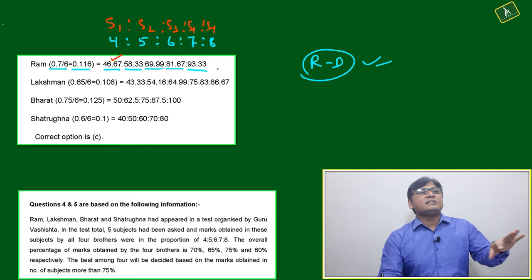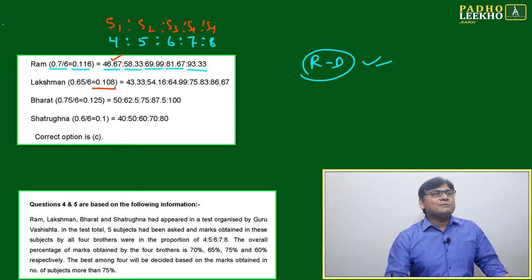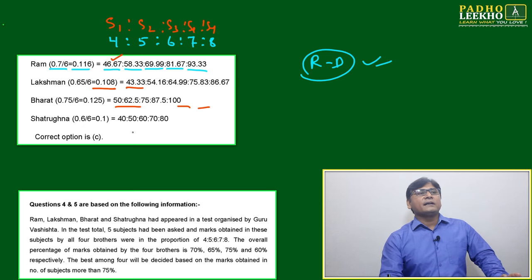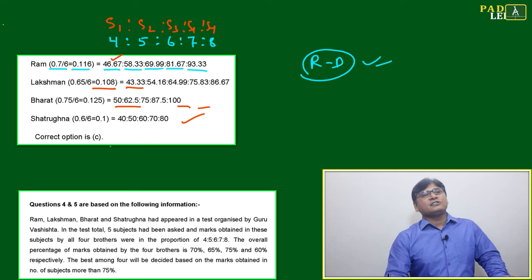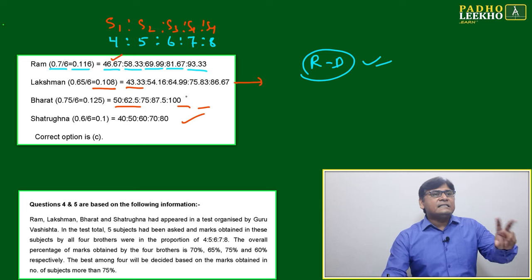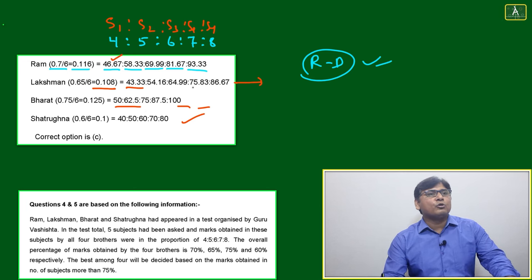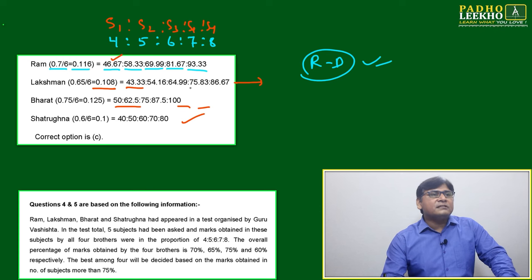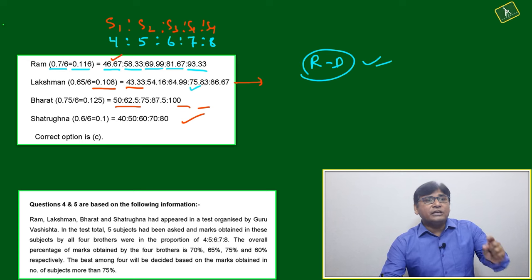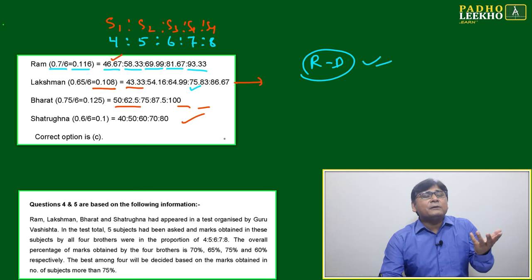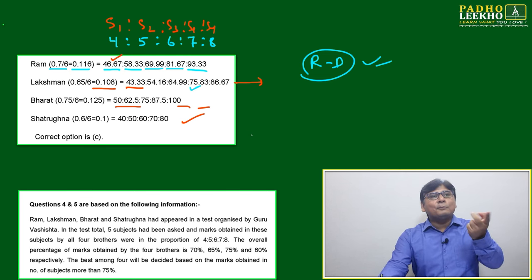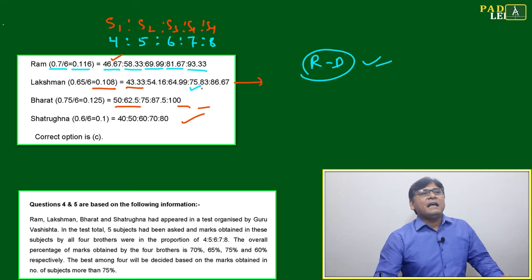For Lachman, x = 0.65/6 = 0.1083. Multiplying gives the five subject scores for Lachman. For Bharat, x = 0.75/6 = 0.125, giving a different set of numbers. For Satrugna, x = 0.60/6 = 0.10, giving yet another set. The question asks: look at Lachman's score and Bharat's score — in how many subjects is each getting 75% or more? For Lachman, the first three subjects are less than 75%.